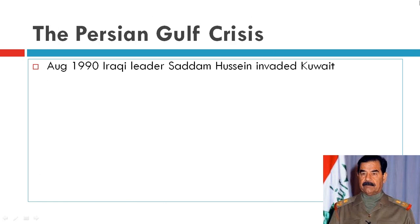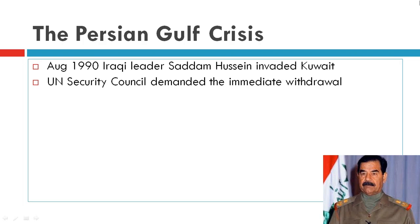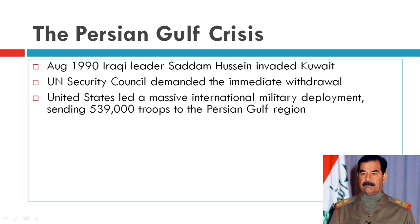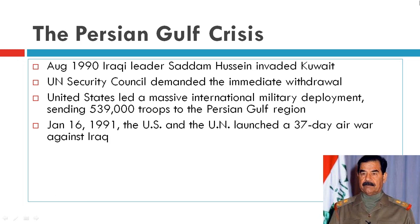In August 1990, Iraqi leader Saddam Hussein invaded Kuwait, and the UN Security Council demanded an immediate withdrawal. The United States led a massive international military deployment, sending 539,000 troops to the Persian Gulf region.